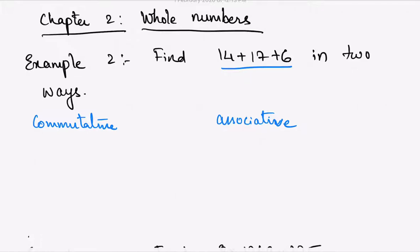First, let's apply the commutative property. We have learned that in commutative property, even if you shuffle the numbers and add the whole numbers, you will get the same result.